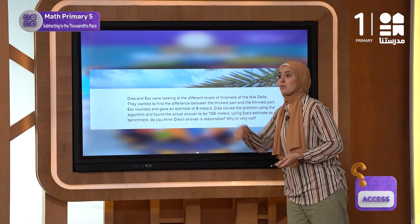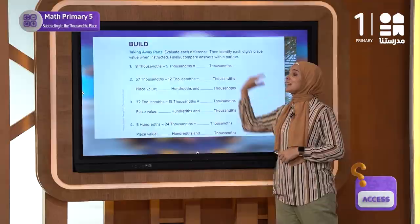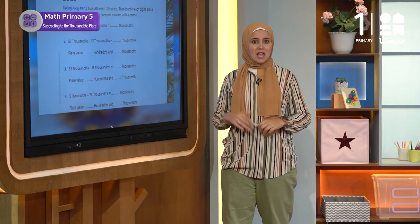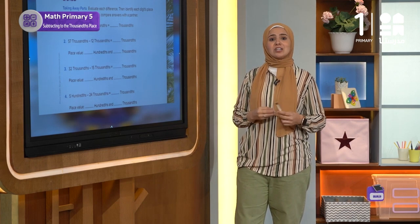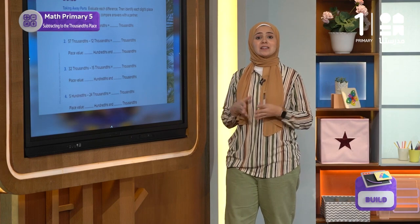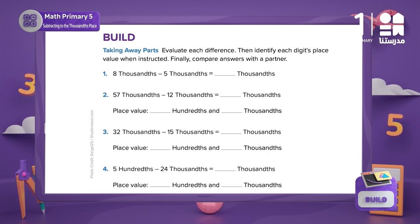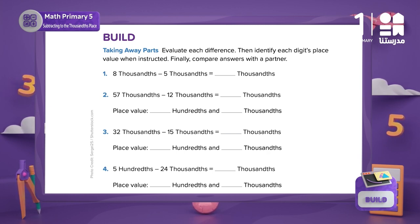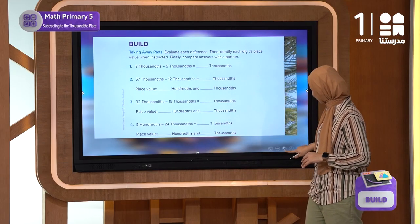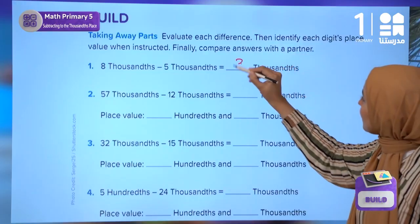Let's practice with more examples. We will solve some problems from the 'Taking Away Parts' activity. In the first problem, we will calculate the difference between 8 thousandths and 5 thousandths. Calculating the difference means we subtract the smaller number from the larger number, so we subtract 5 thousandths from 8 thousandths. The result is 3 thousandths.